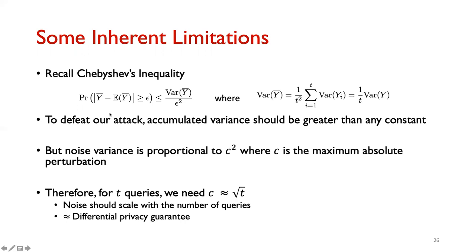This recommendation also sheds light on the inherent limitations of bounded noise algorithms. Recalling Chebyshev's inequality, to defeat our attack the accumulated variance must grow without bound. This accumulated variance depends on 1/T times the variance of the noise, which is proportional to C² where C is the maximum absolute perturbation. For accumulated variance to remain a constant, the noise scale must be proportional to the square root of T. This is precisely the guarantee from differential privacy using a Gaussian mechanism under concentrated differential privacy.